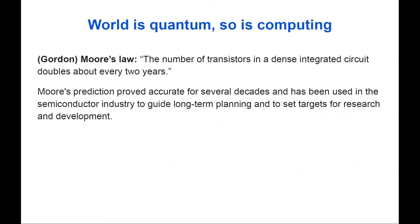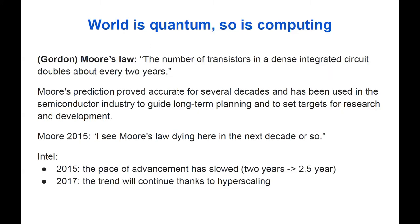Some of you have heard about Gordon Moore's law, which says the number of transistors in a dense integrated circuit doubles about every two years. These predictions proved accurate for several decades and guided long-term planning in the semiconductor industry. But a few years ago, even Gordon Moore said he sees Moore's law dying in the next decade. Intel realized the pace of advancement has slowed — now transistor count doubles roughly once every two and a half years, though the trend continues thanks to hyperscaling.